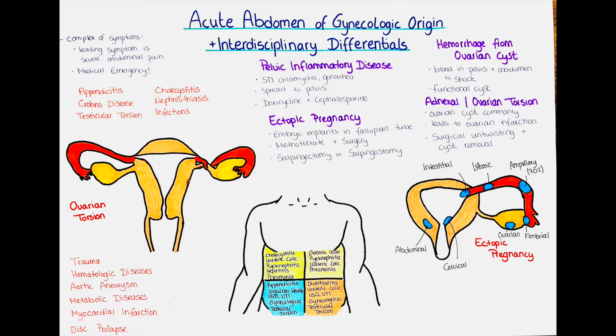Acute abdomen is not its own disease. It is more a complex of symptoms that presents with severe abdominal pain as the leading symptom and can be potentially life-threatening. It is always a medical emergency and can be caused by many different underlying conditions from all kinds of fields within medicine.